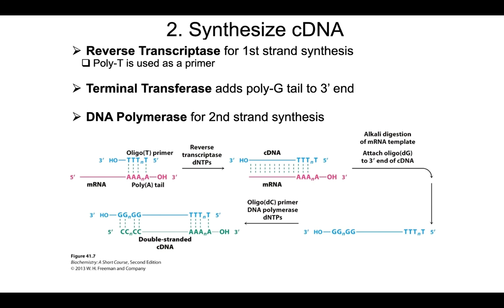The next step is to use that RNA as a template to synthesize double-stranded cDNA. In red is our messenger RNA — 5', 3', and the poly-A tail. To this, we add what's called an oligo-T primer: it's made out of DNA, it is single-stranded, it's only about 25 nucleotides long, and all of those nucleotides are T's. Those will hybridize to the poly-A tail of the messenger RNA.